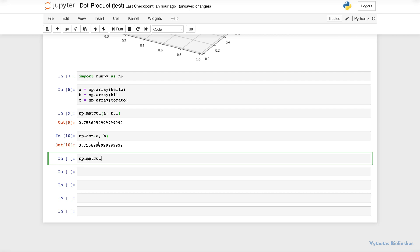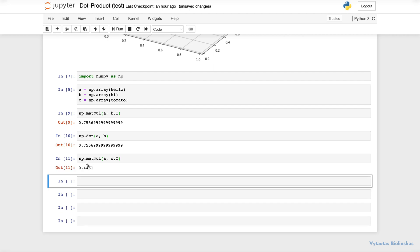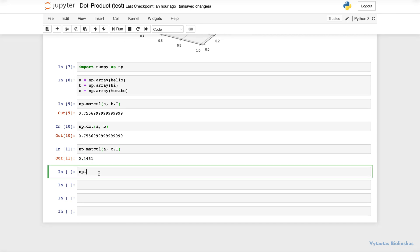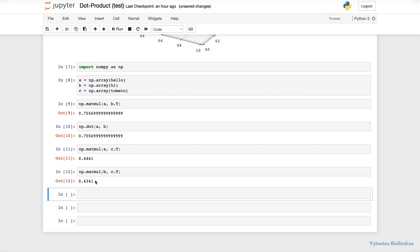Let's do it. numpy matmul a c transposed and it is equal around 0.446. Then numpy matmul b c transposed and it is equal around 0.434.